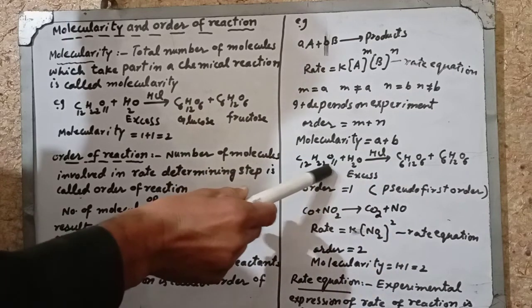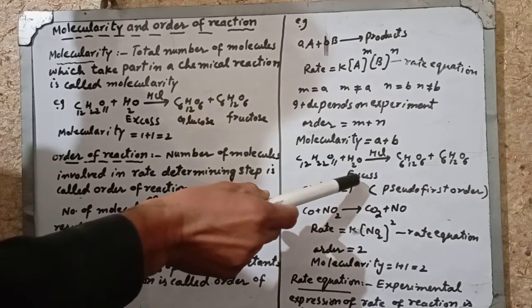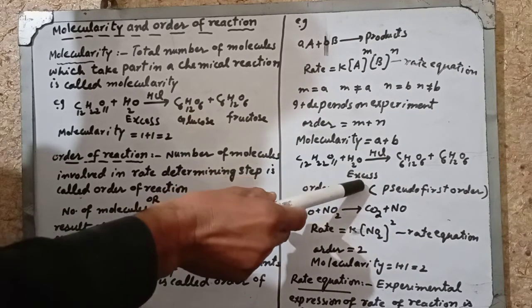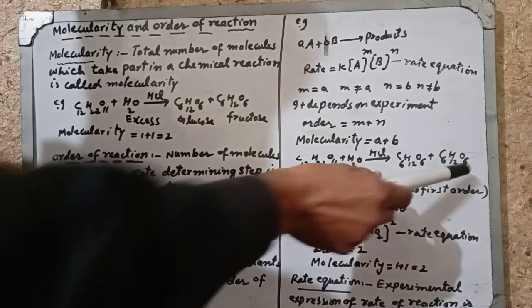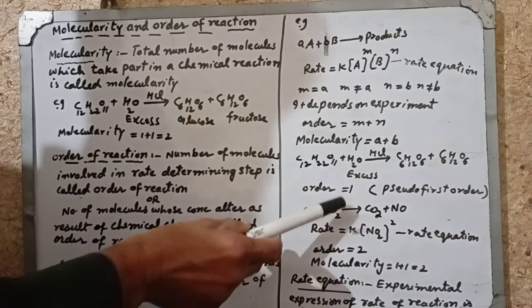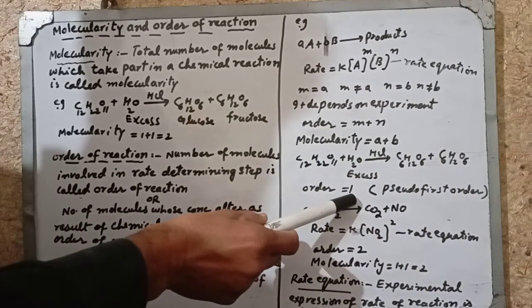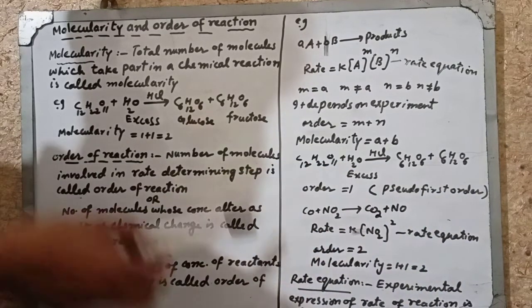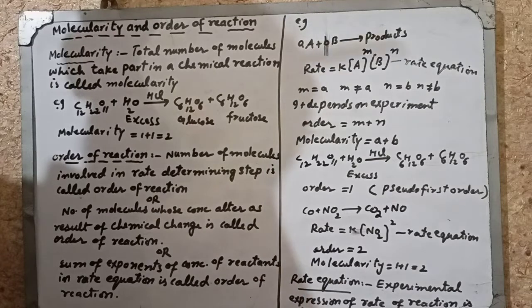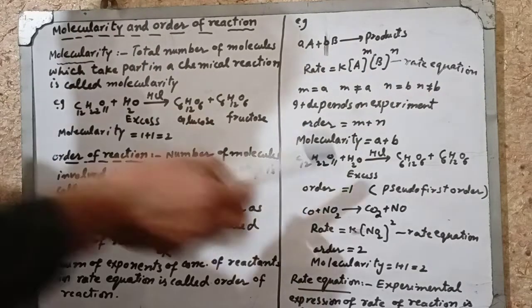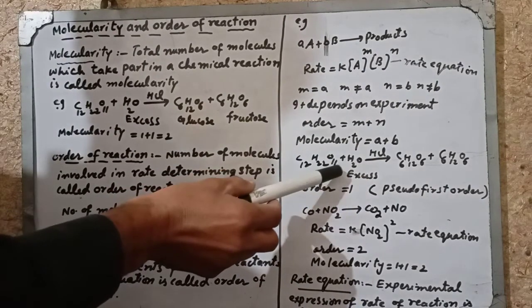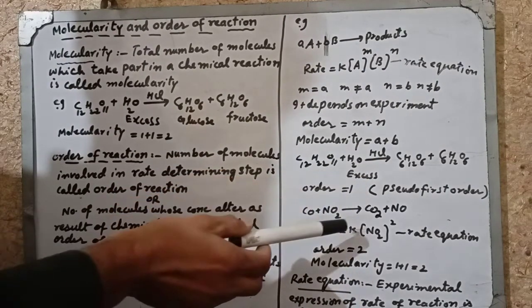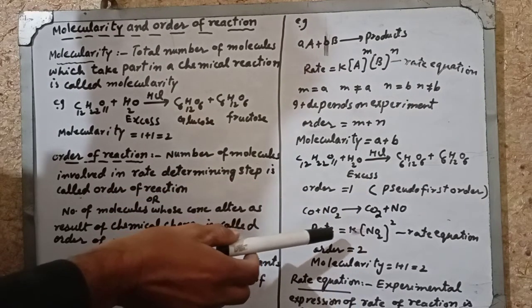Taking the sucrose example again — water is in excess, so glucose and fructose are formed. Order is equal to 1. These are called pseudo first order reactions, where two molecules participate but one does not effectively contribute because it is in excess. This is called pseudo first order.